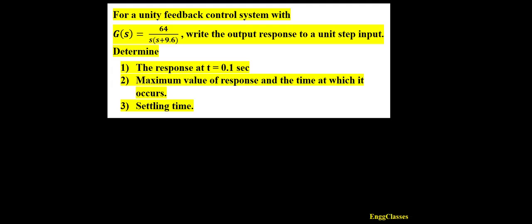Hello everyone. Welcome to ng-classes YouTube channel for a video lecture series in control systems. In this video lecture we shall consider a numerical for a unity feedback control system with G(s) equal to 64 divided by s times (s + 9.6). The task is to write the output response to a unit step input, determine the response at t = 0.1 second, maximum value of response and the time at which it occurs, and lastly the settling time.